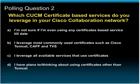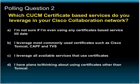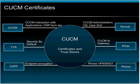Without dwelling in too much detail about the SANE, there is the TAPF certificate, which is used for creating the certificate trust list and also for endpoint encryption. The phones will leverage the locally significant certificate, and would establish TLS with CCM. At the same time, they are able to establish SRTP with another encrypted endpoint, which can be another phone or a gateway.